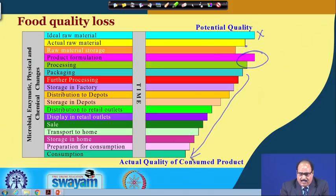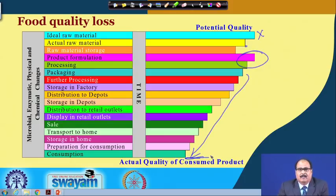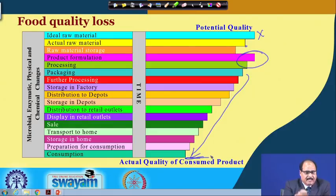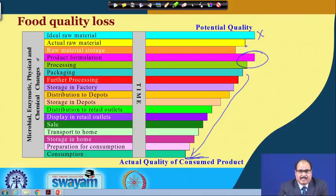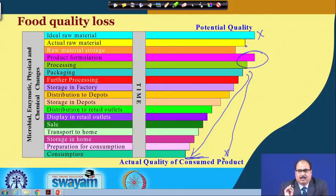The actual quality of the consumed product is generally much less than the potential quality of the ideal raw material. All these changes in quality — whether microbiological, enzymatic, physical, chemical — can be minimized or can be accelerated. By appropriate selection of process parameters and other parameters during storage and handling, we try to keep these changes as minimum as possible so that food quality is retained to the maximum extent.